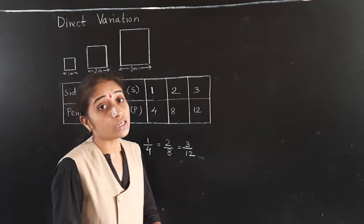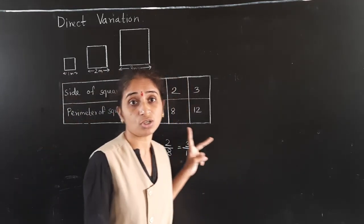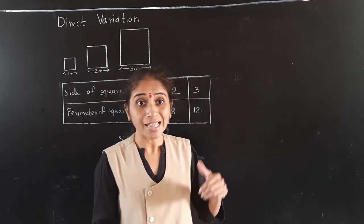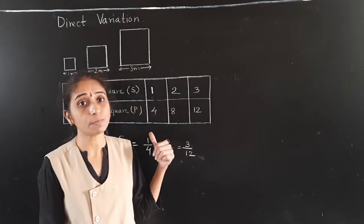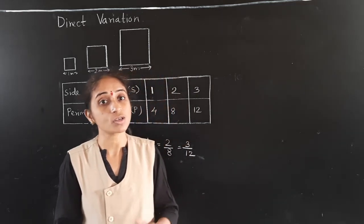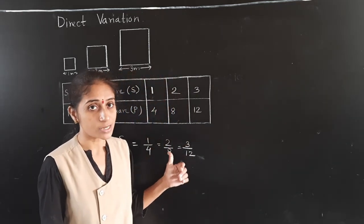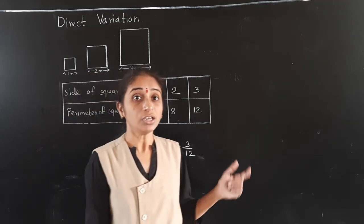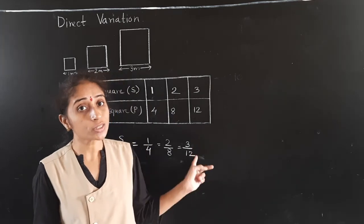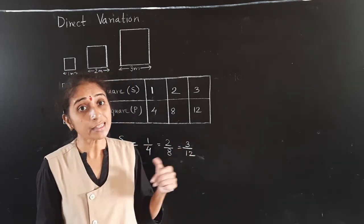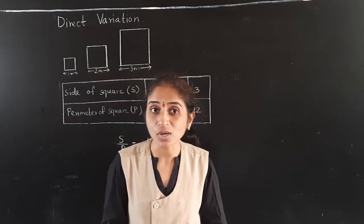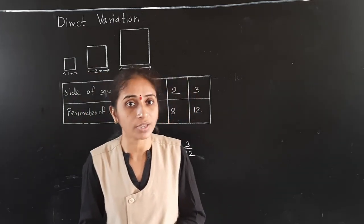If a relationship exists between 2 variables such that their ratio is constant, then that kind of relationship is called Direct Variation, and the ratio is called the Constant of Variation.